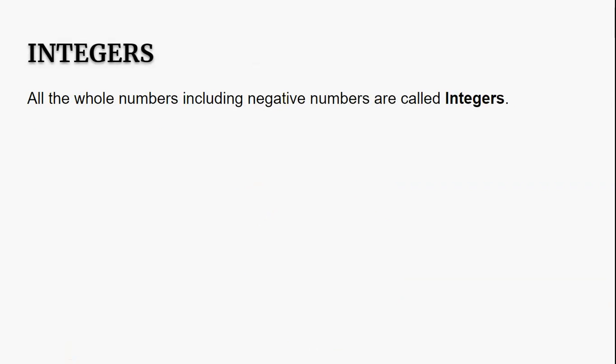Now let us see what are integers. All the whole numbers including negative numbers are called integers. They are represented by capital Z. So Z is equal to a set of negative numbers and positive numbers along with 0.